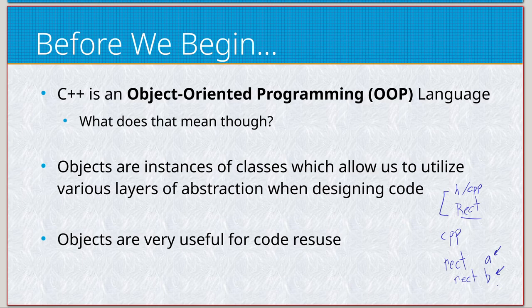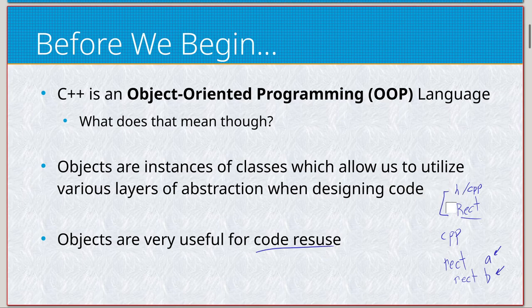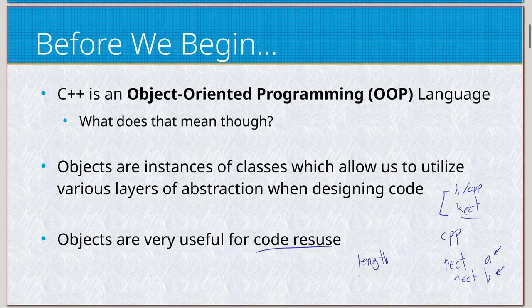By default they're going to have the same constructor — just the default constructors — they're going to be identical at the very beginning. But I can alter the attributes of these individually. So you see it's very useful for code reuse: I can use the bits and pieces of code that construct the class in these objects individually, even though they use the exact same code. A is going to extend the rectangle class and have a length, height, color, and so on.